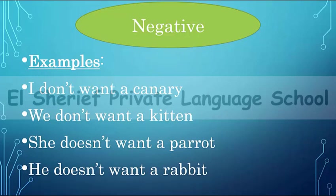In the first example we used 'don't' because we have the subject 'I.' The same with the second example: 'we don't want a kitten.' We use 'don't' with I, you, we, and they — so: I don't, you don't, they don't, we don't. After 'don't' we have the base verb: don't want. For 'she' and 'he,' we use 'doesn't': she doesn't want a parrot, he doesn't want a rabbit.